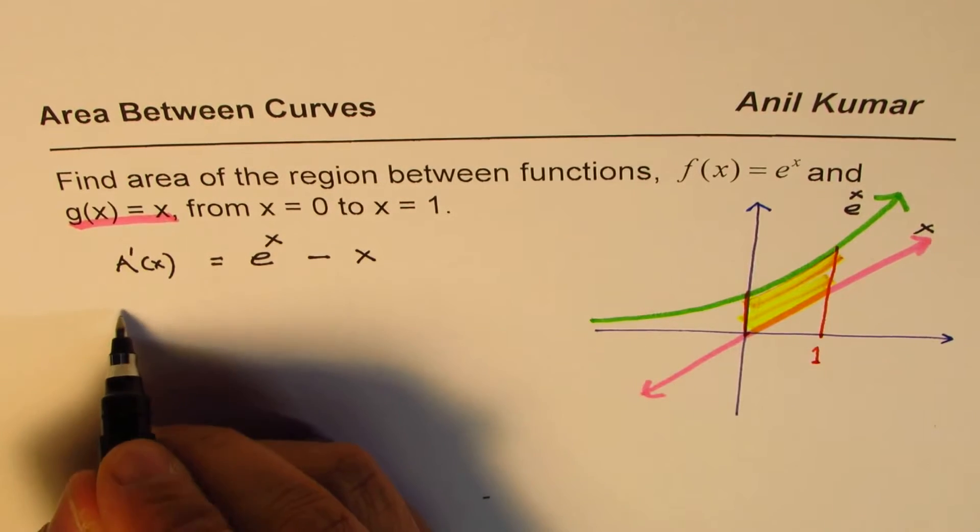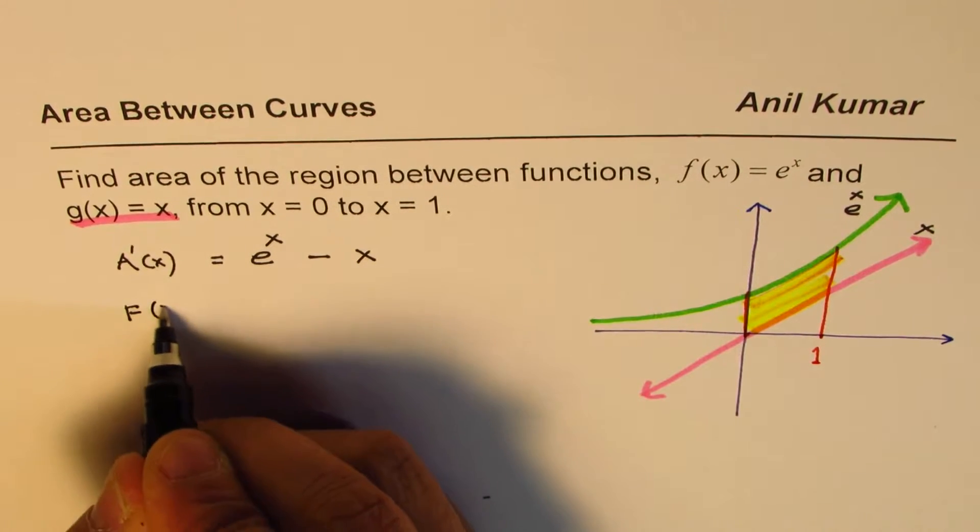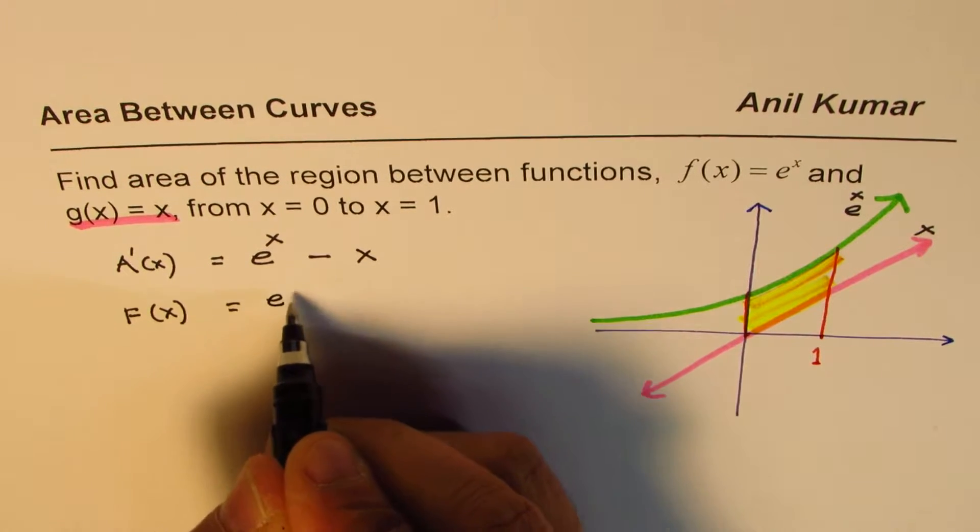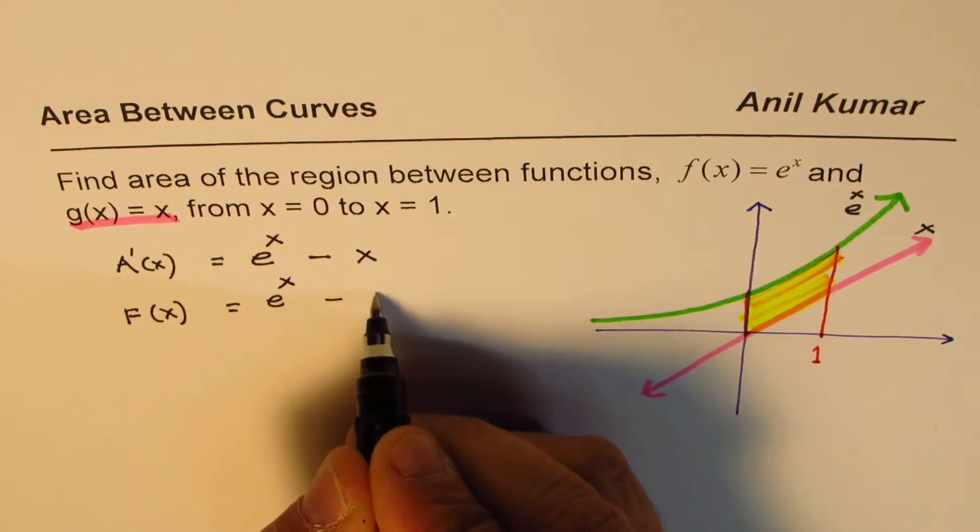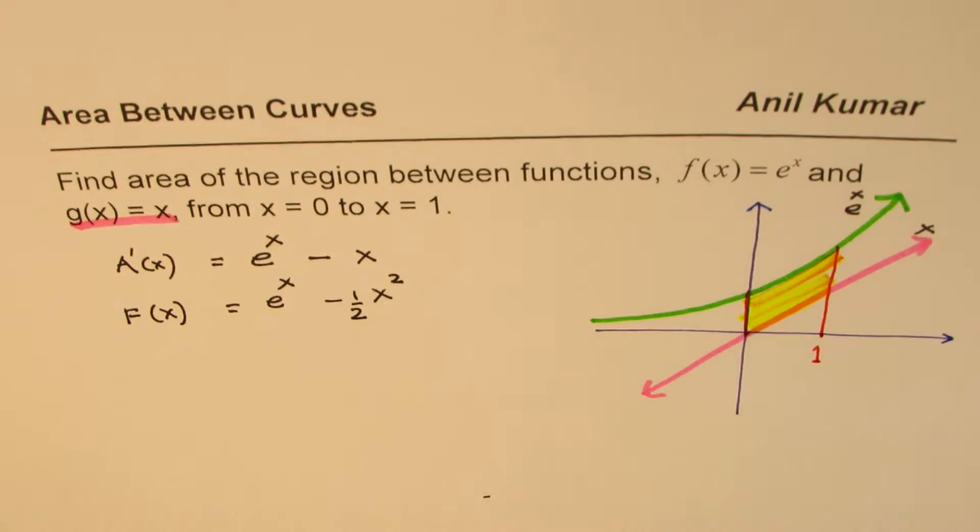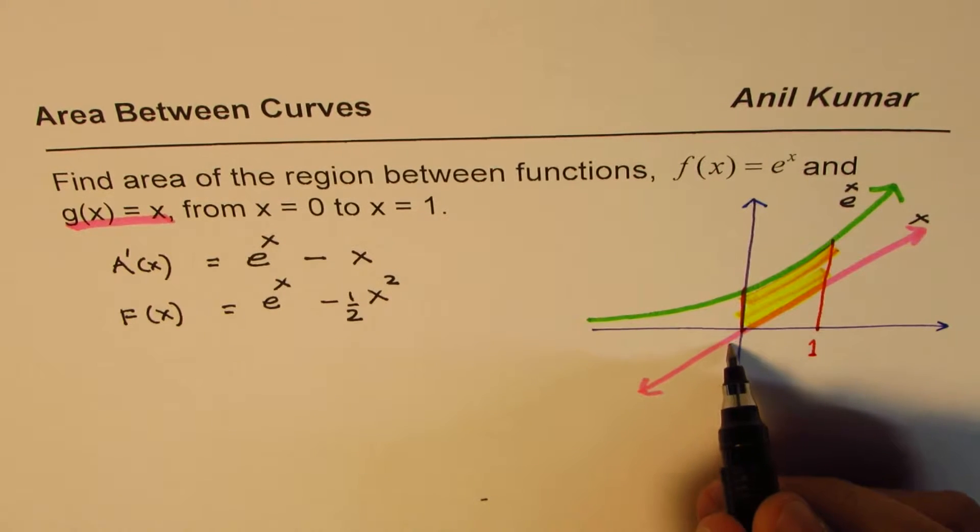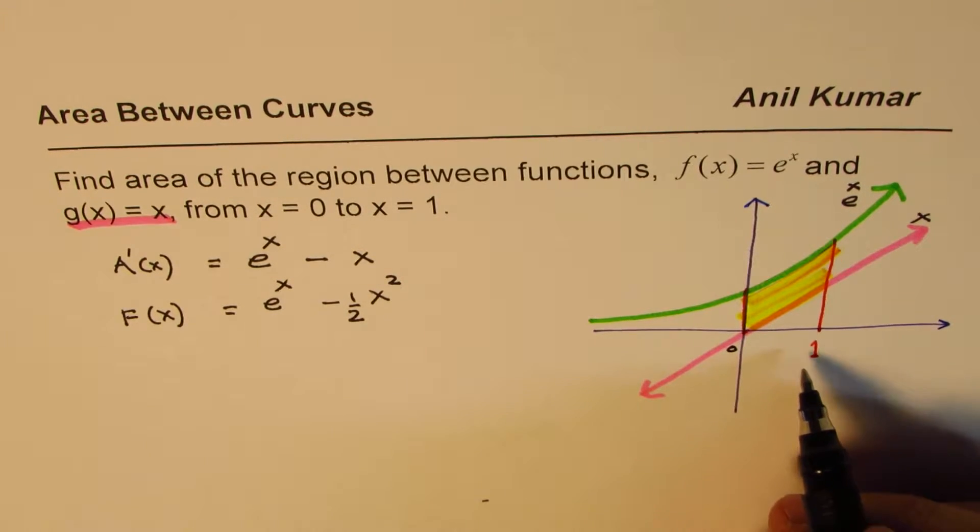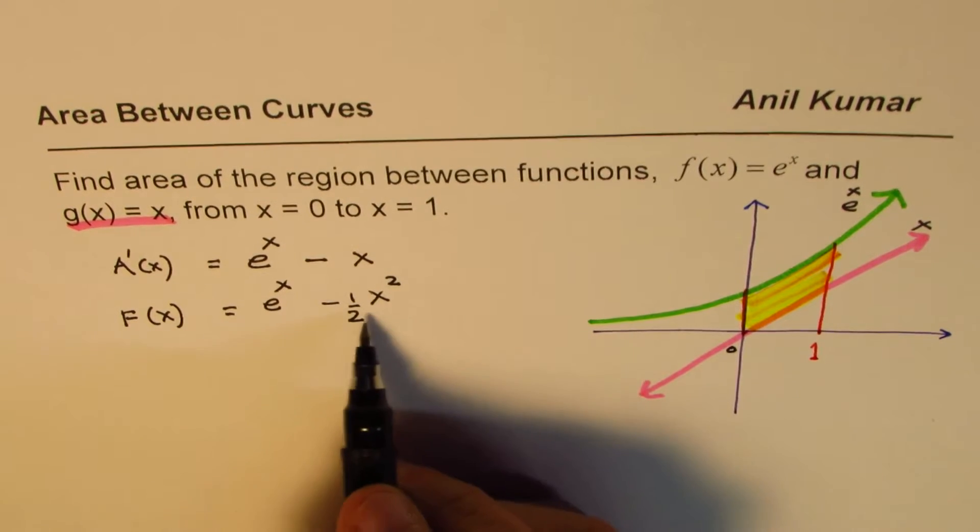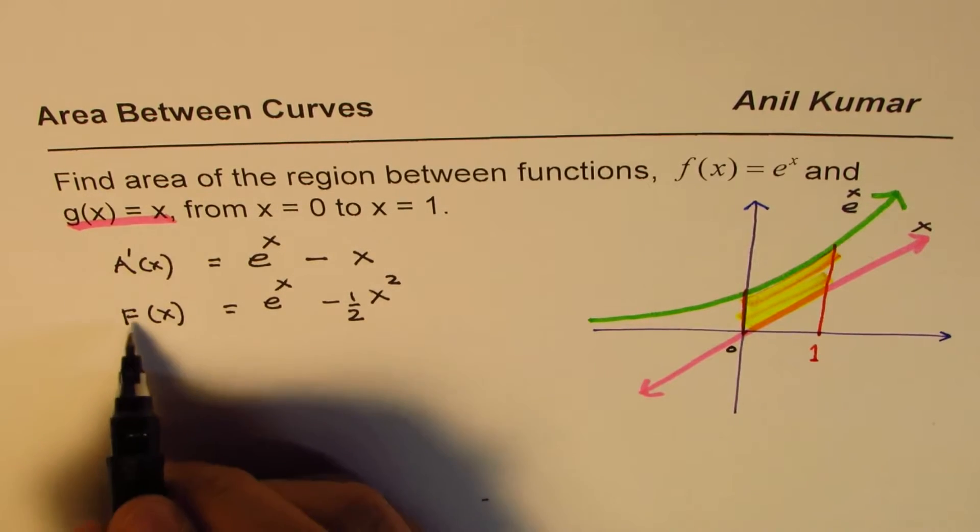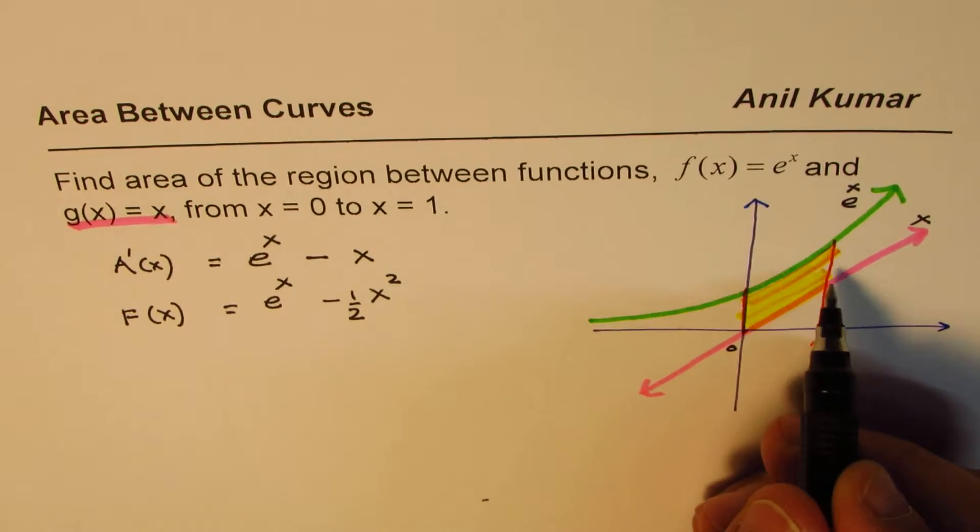So anti-derivative of this could be written as F of x equals anti-derivative of e to the power of x is e to the power of x. And for x, it is half x square. Plus zero, we are choosing c to be zero in this case, since when we have boundaries, here it is 0 to 1, they will cancel out. That's the whole idea. So that is how we get an expression for anti-derivative. And that gives us the area in this region.